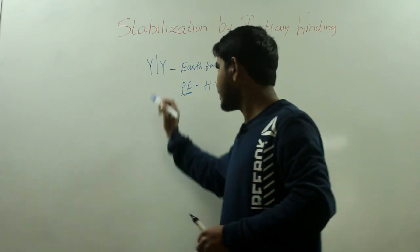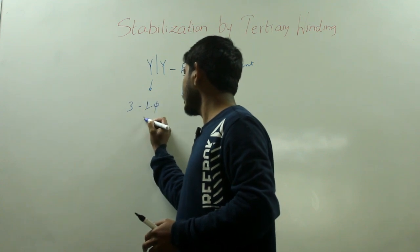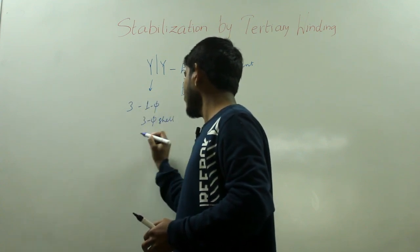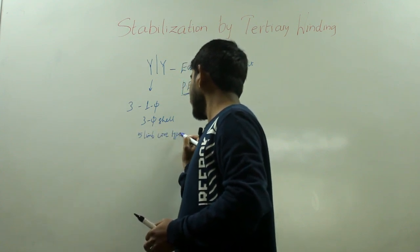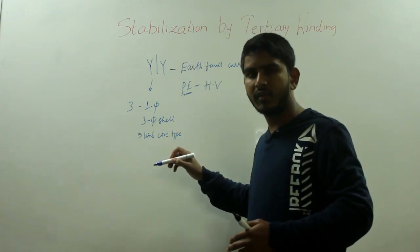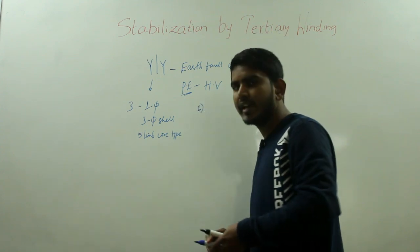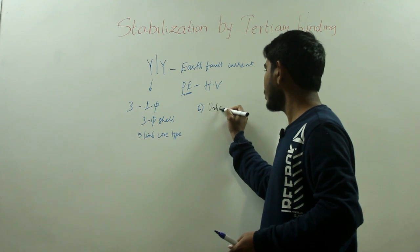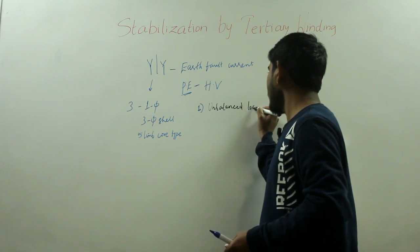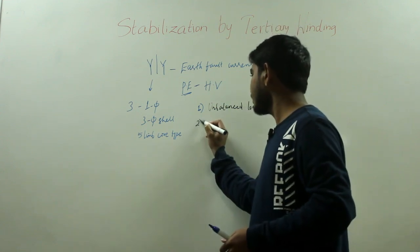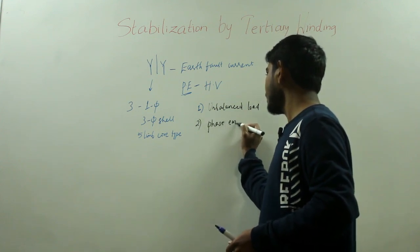If I talk about the star-star connected transformer comprising three single-phase units, a three-phase shell unit, or a five-limb core type transformer, these transformers have two drawbacks when operated under unbalanced load. The first drawback is that they cannot readily supply an unbalanced load between line and neutral, and the second drawback is that their phase EMF may get distorted due to harmonic EMFs.